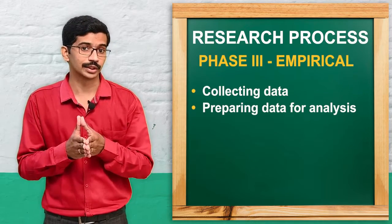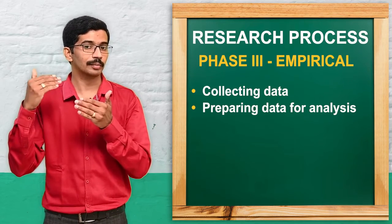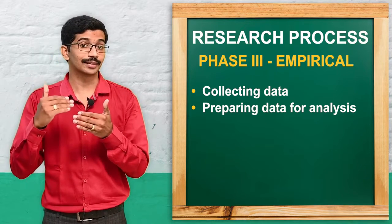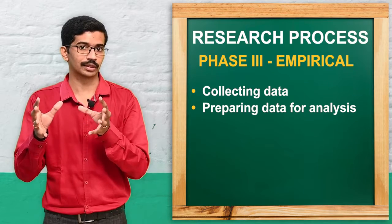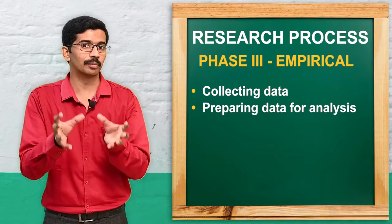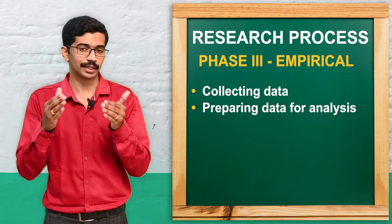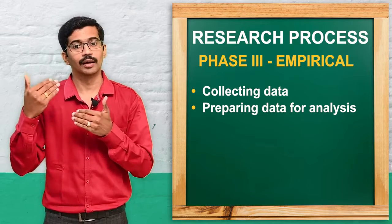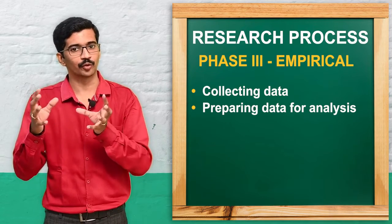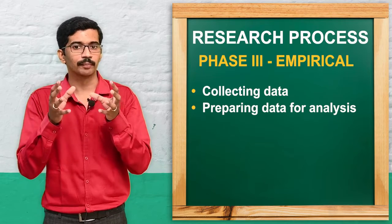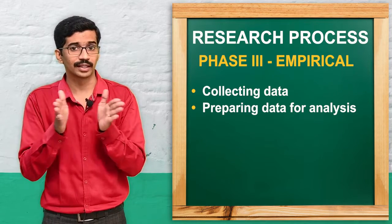The third phase is the empirical phase, also called the action stage. Having already prepared the sample, design, and data collection method, we now carry out the collection of data. Using instruments like rating scales or questionnaires, we collect data from the sample. The second stage of this phase is preparing the data for analysis — the collected data is recorded and organized into tables or other structured formats.